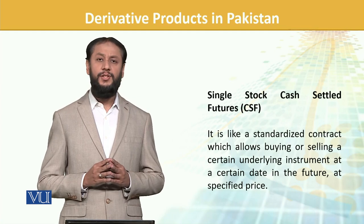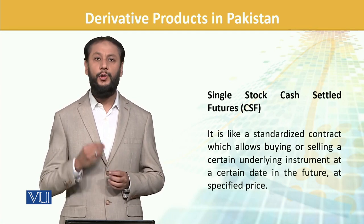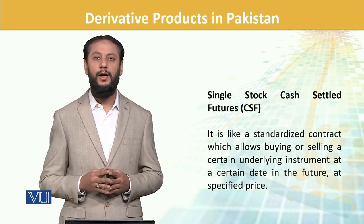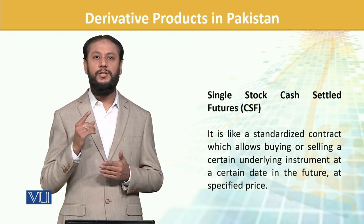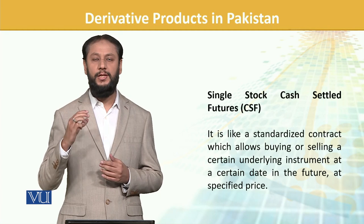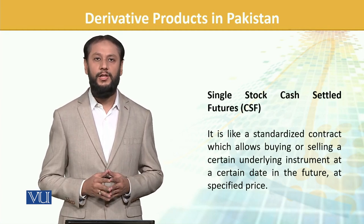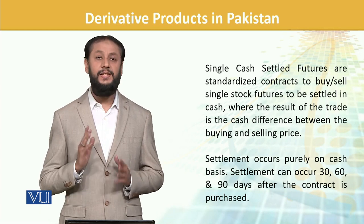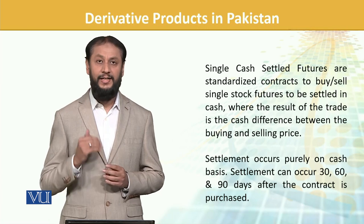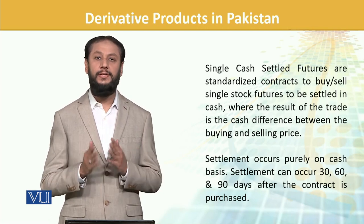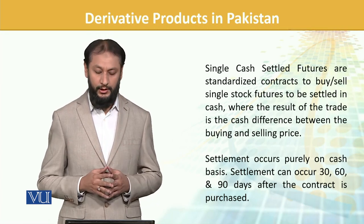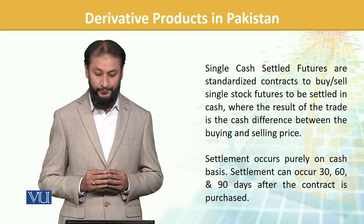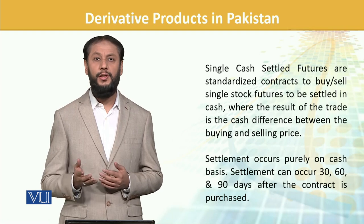Single Stock Cash-Settled Futures are standardized futures on individual company shares. Gains or losses — the DGC — are settled purely on a cash basis; there is no actual delivery of the underlying stock. Settlement can occur at 30, 60, or 90 days depending on which contract was entered.